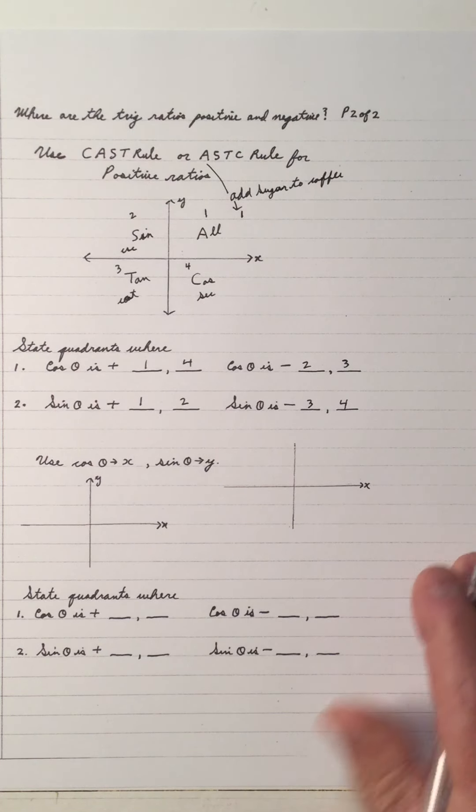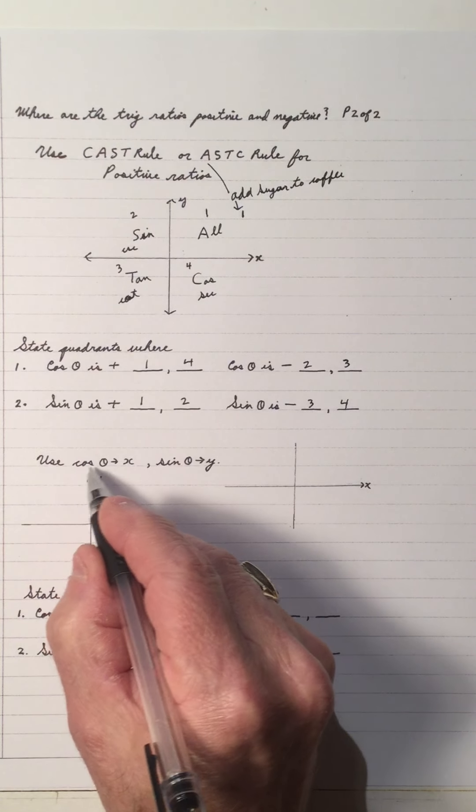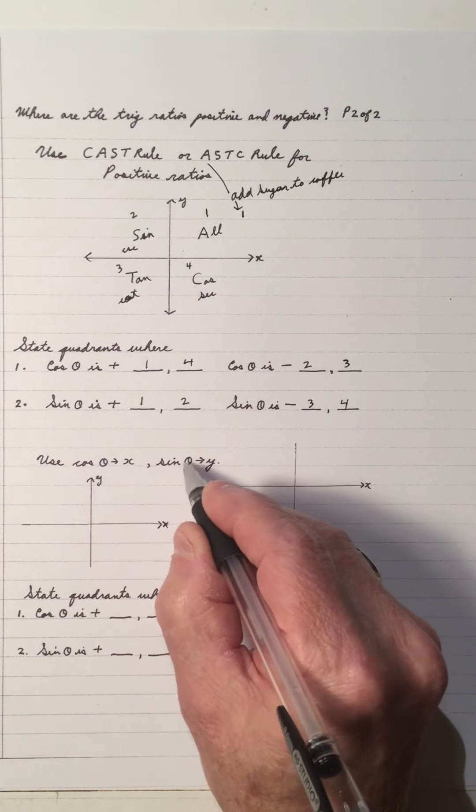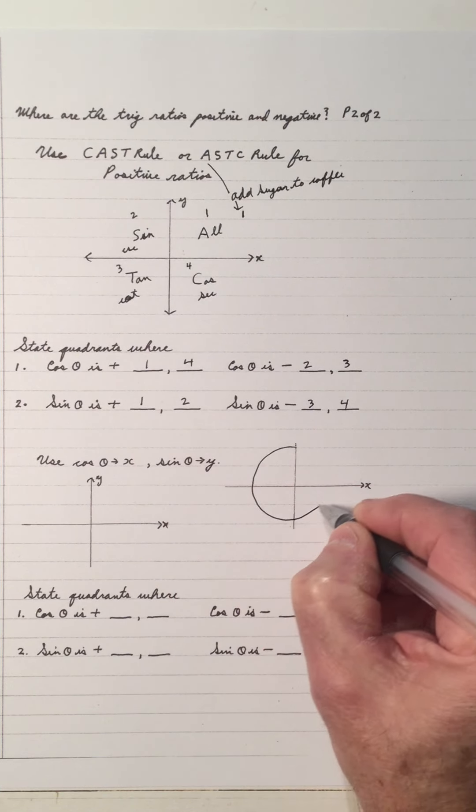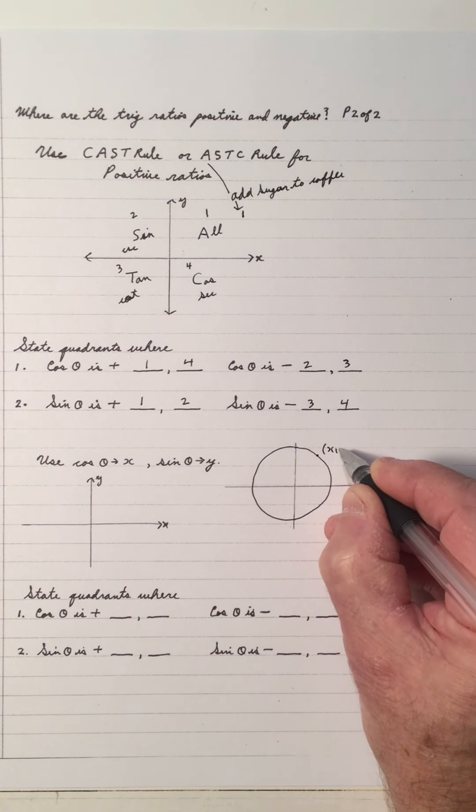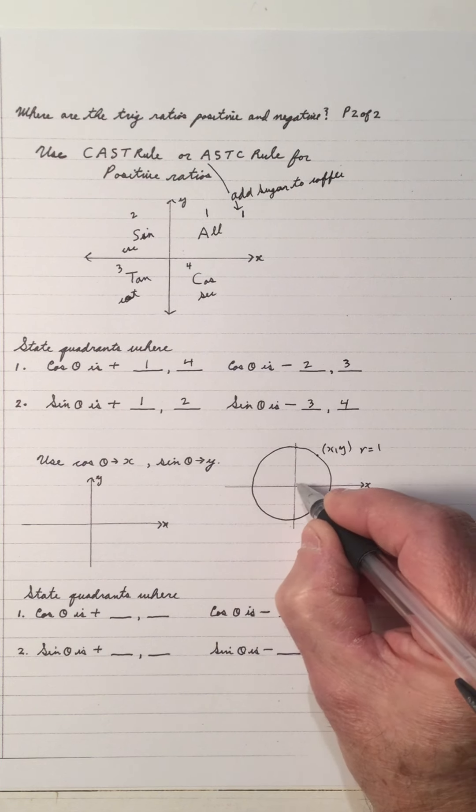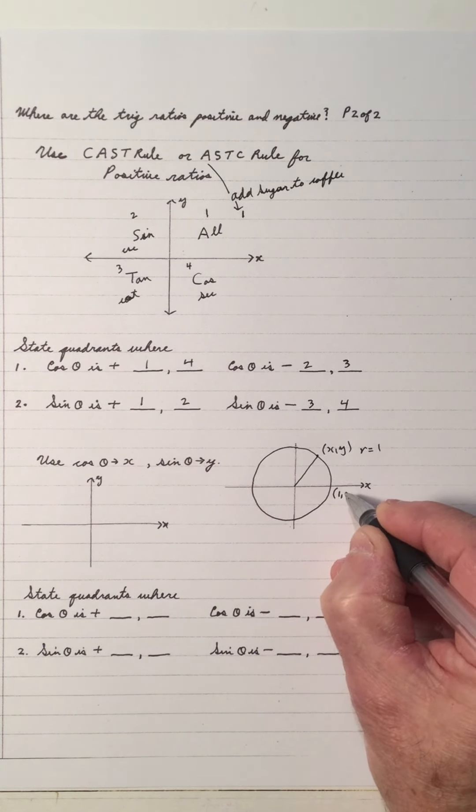That's one way. I also like the idea that cos is associated with the x, and sine is the y. Let's draw this circle. And let's plot a point on the circle, x, y. This circle has a radius of 1. That means that this point is 1, 0.